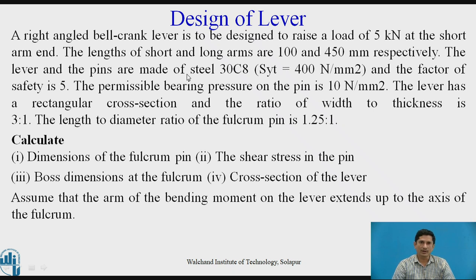The lever and the pins are made of 30C8, for which the SYT value is 400 N per mm square and the factor of safety is 5. The next data is the permissible bearing pressure on the pin, which is given as 10 N per mm square. The lever has a rectangular cross section and the ratio of width to the thickness is 3:1. The length to the diameter ratio for the fulcrum pin is given as 1.25:1.